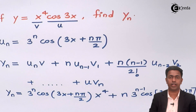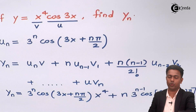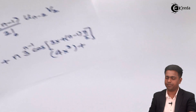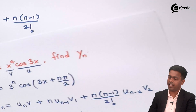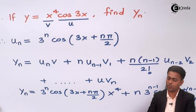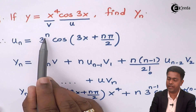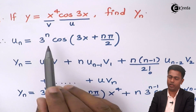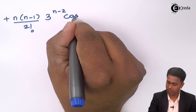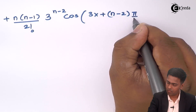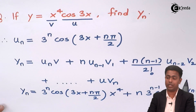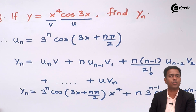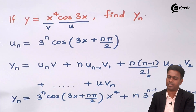Next the term with n(n−1)/2! remains as is. For u(n−2), we replace n with n−2 in the nth derivative formula. Then v2 is the derivative of v1 = 4x³, which is 12x².